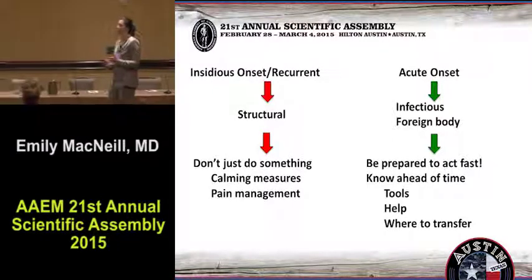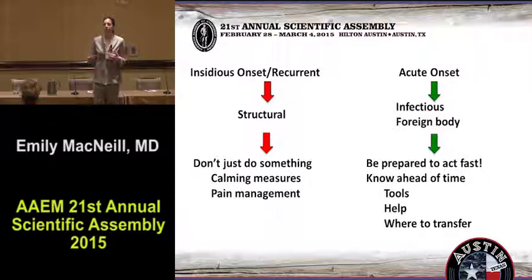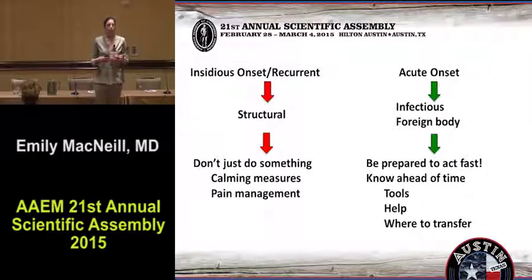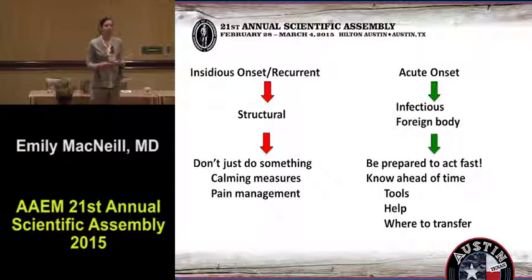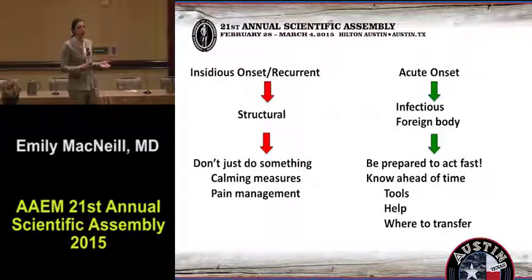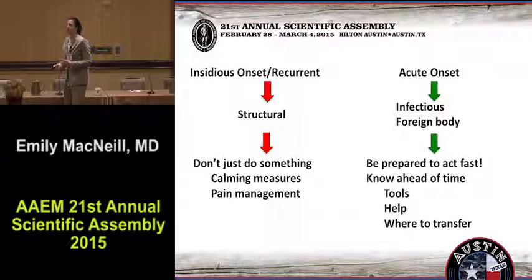By being prepared to act fast, you have to know ahead of time exactly what you're going to do. Do you know right now where your pediatric McGill forceps are in case someone comes in with a foreign body? Because you're going to have about two minutes to figure it out once they get there. Knowing what tools you have is really important. Knowing what help you're going to get — where are they? Is it the same help at Sunday morning at 3 a.m. as it is at Tuesday afternoon at 1? You have to know this ahead of time. And where you're going to transfer the child is something you need to know as well.